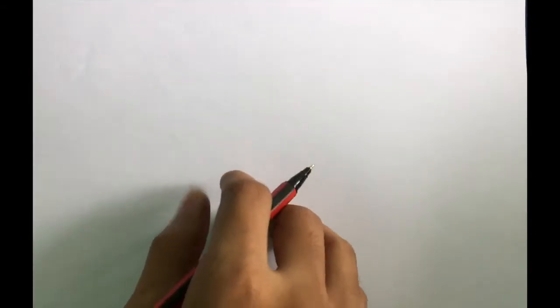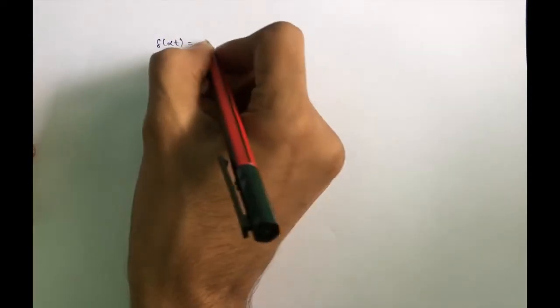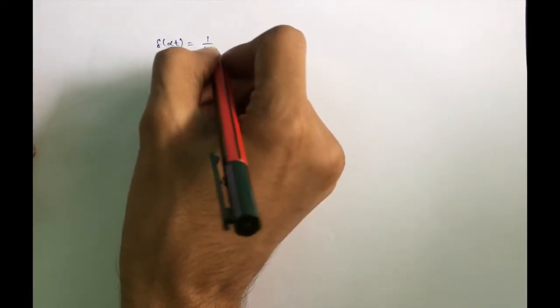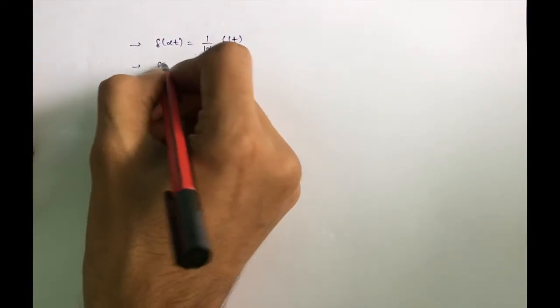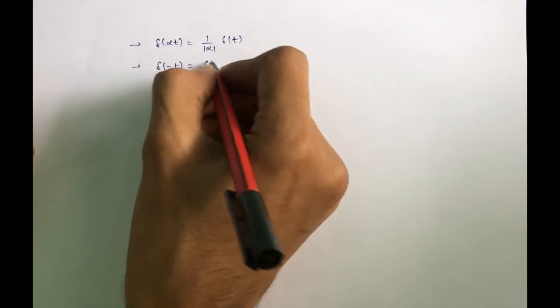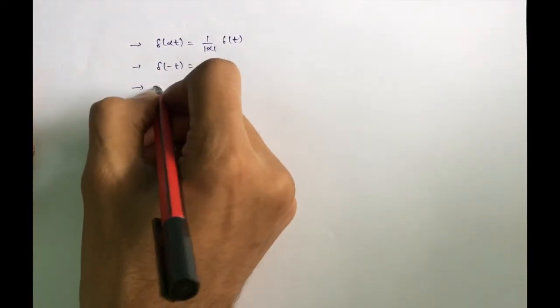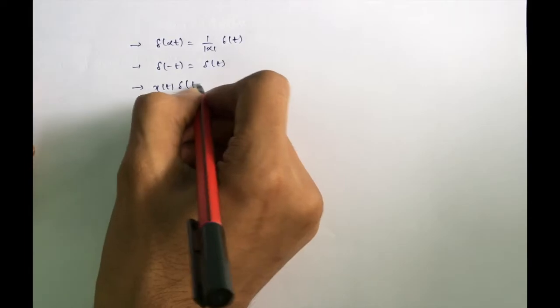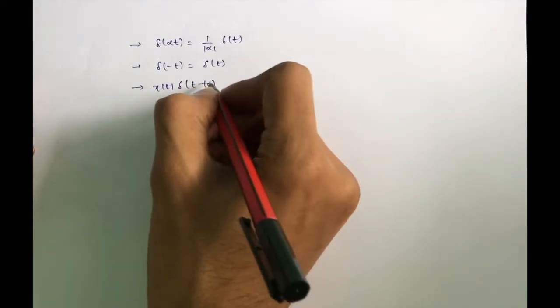Before solving this, let's look at impulse function properties. We know δ(αt) = (1/|α|) · δ(t), which is the scaling property. Putting α = -1, δ(-t) = δ(t), which proves that δ(t) is an even function.